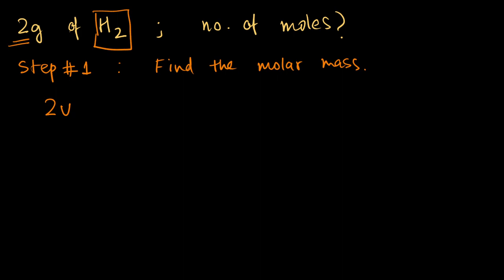Now the mass of one molecule of hydrogen is 2u, so using tricks, the molar mass will be 2 grams per mole.